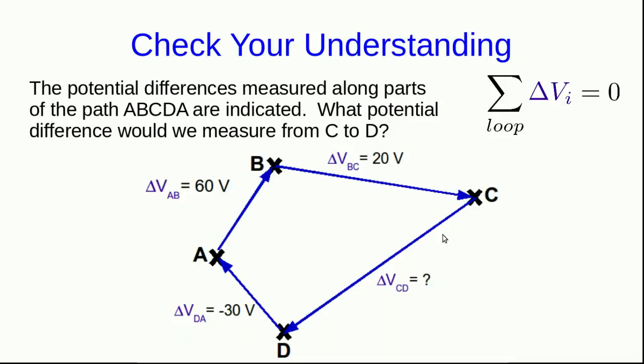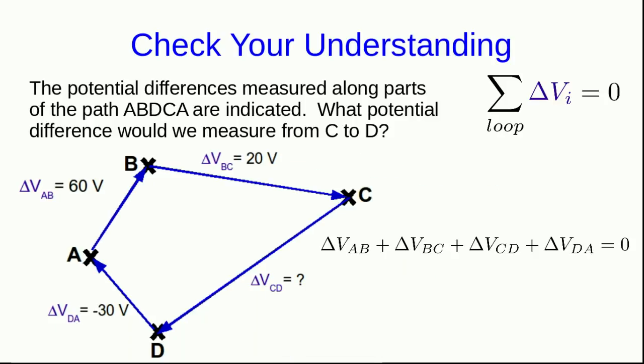Here is the question that I ended the first part of this video lecture with, and it's very simple to work out. All you have to do is construct the sum of the potential differences around the loop, solve for the one we're looking for, which is the one from C to D, and plug in the numbers, and you'll easily come up with a potential difference from C to D of negative 50 volts.